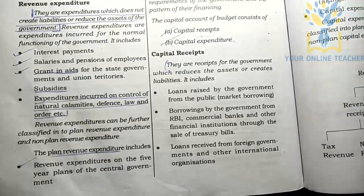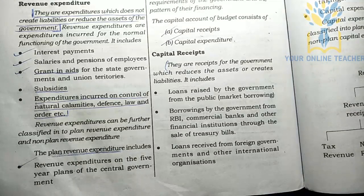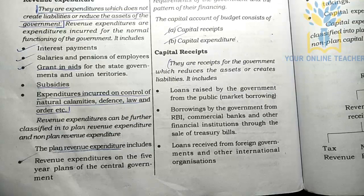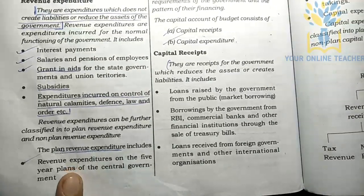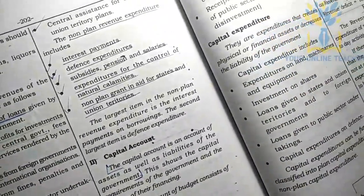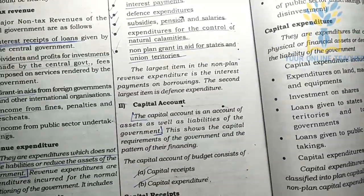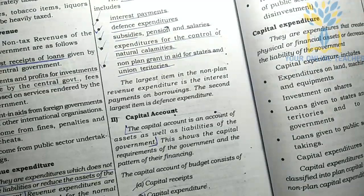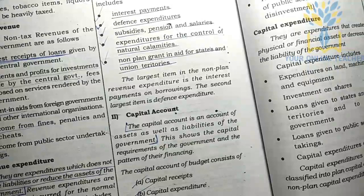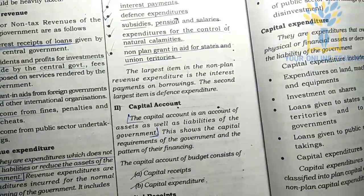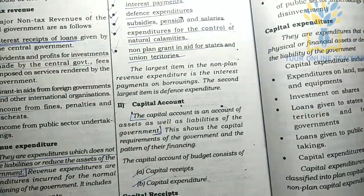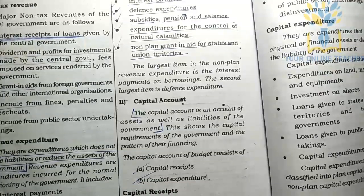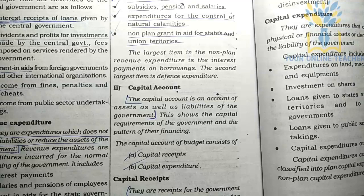Revenue expenditure is divided into plan revenue expenditure and non-plan revenue expenditure. Plan revenue expenditure covers spending under the five-year plans of the central government and central assistance for state and union territory plans. Non-plan revenue expenditure includes interest payments, defense expenditures, subsidies, pensions, salaries, relief for natural calamities, and non-plan grants to states and union territories.